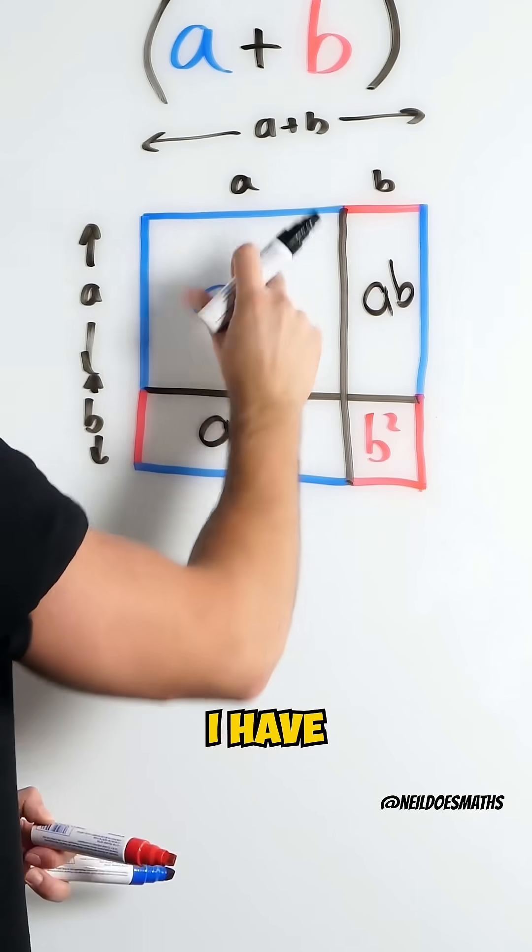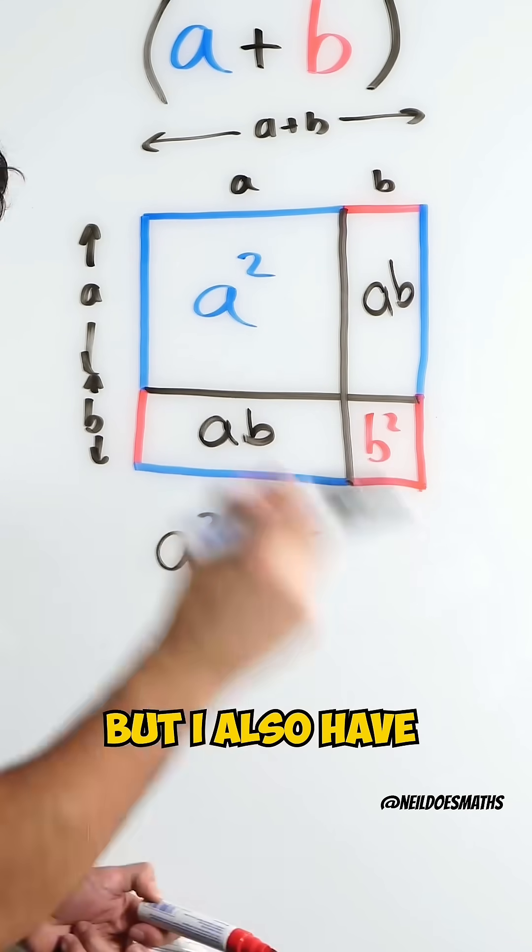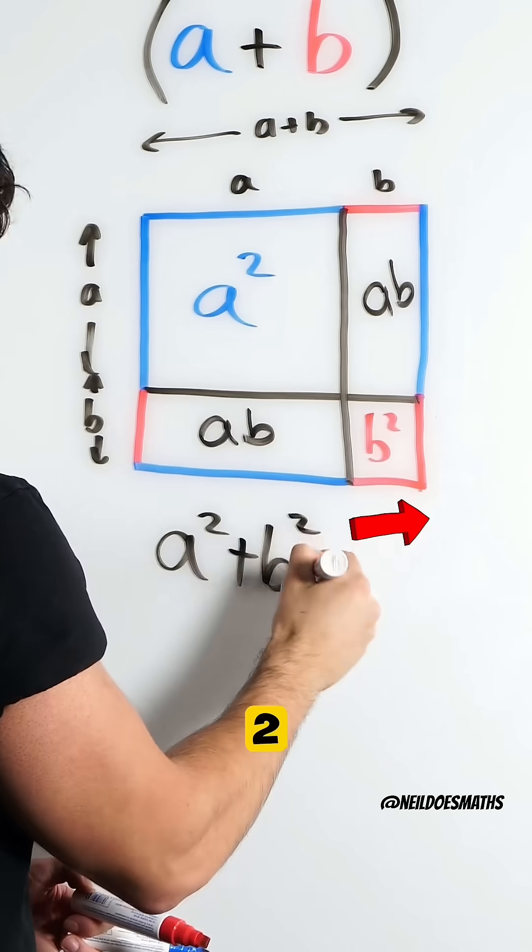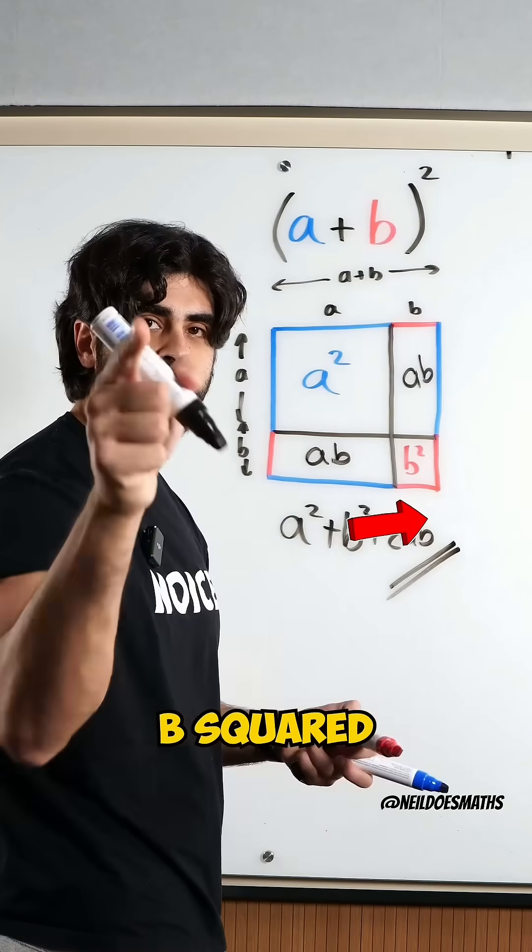So, in total, I have A squared and B squared, but I also have an additional 2 A B. And that is our expansion for A plus B squared.